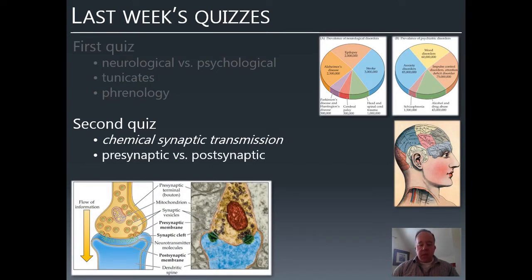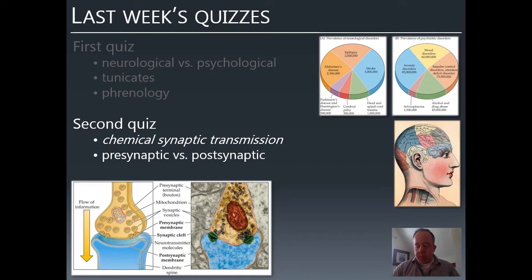The distinction between presynaptic and postsynaptic can be tricky. The thing to remember is which way information is going. Information flows from the dendrite to the cell body to the axon to the axon terminal of a neuron, and from the axon terminal to the dendrite of the next neuron. The side sending information is presynaptic—it's where the axon terminal, mitochondria, and synaptic vesicles are. The dendritic spine is on the postsynaptic side; it's picking up and receiving the information.